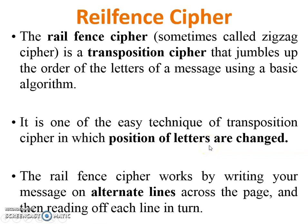The Rail Fence Cipher works by writing your message on alternate lines across the page and then reading off each line in turn.